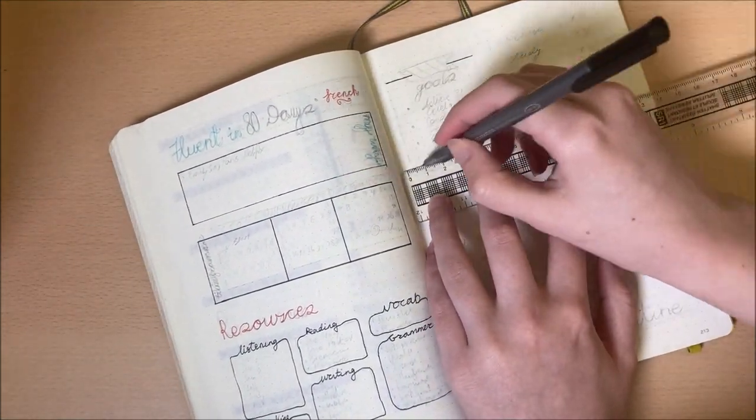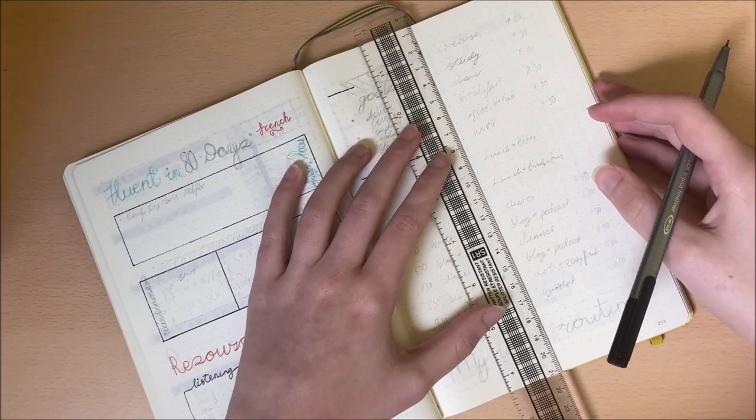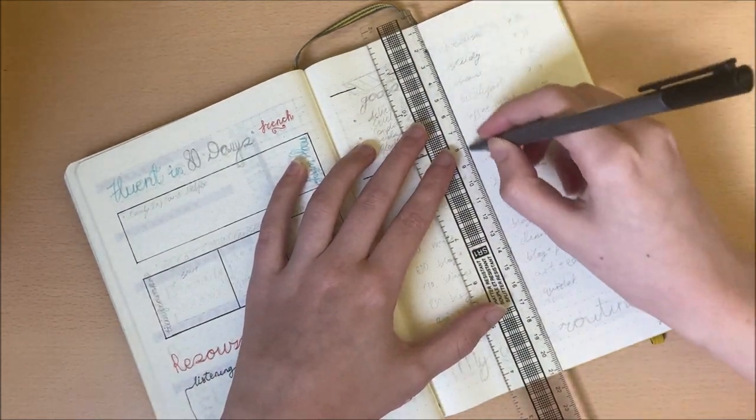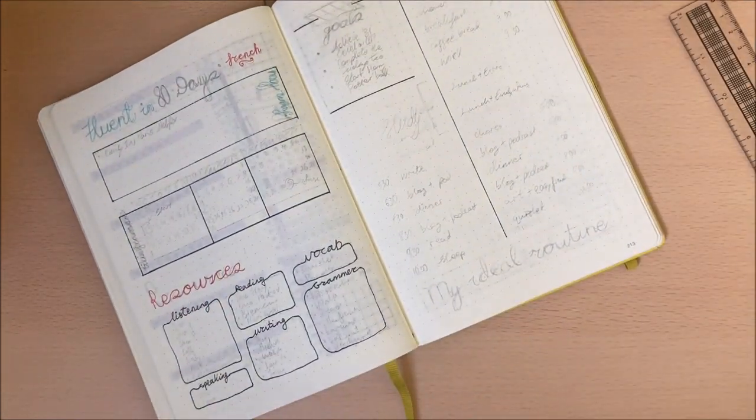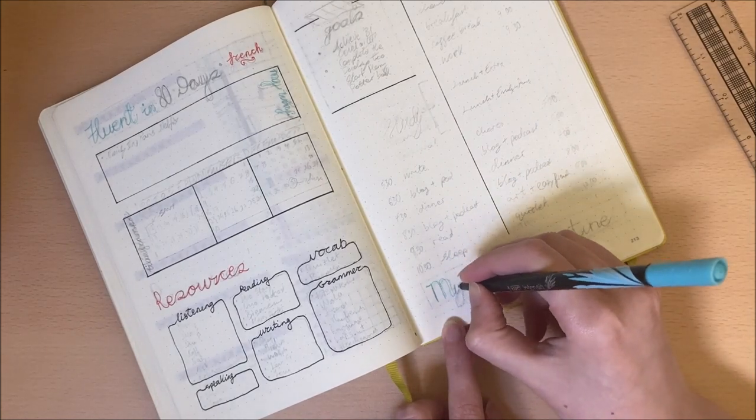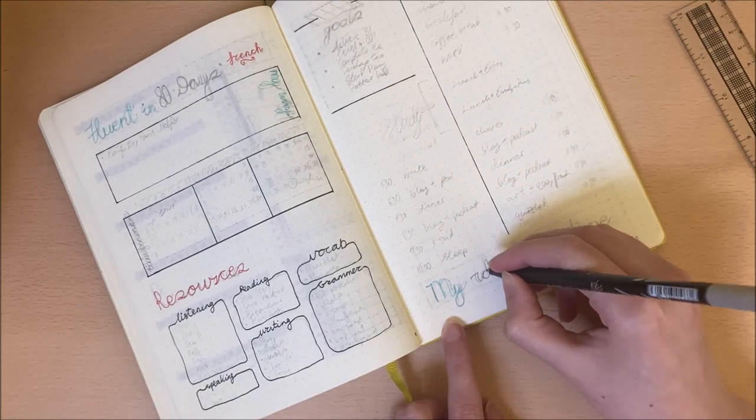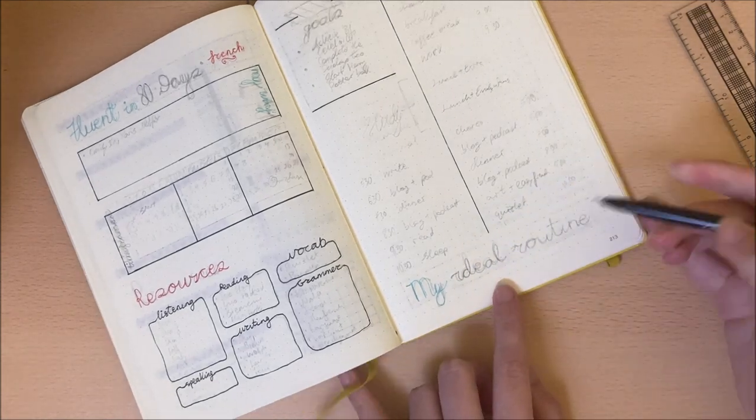This next page will have a cute sort of sticky note idea to track my three main goals I wish to achieve for this challenge, as well as my ideal daily routine listed out so I can keep track of what I need to do and when.